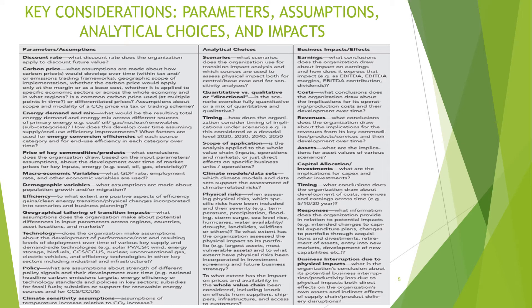There are various parameter considerations for climate risk. The discount rate is the rate at which an organization is willing to accept risk. Carbon price is usually set by government or provincial government within their jurisdiction. Other parameters include energy demand and energy mix — the percentage of coal, gas, nuclear, renewables, etc. — key commodity prices, macroeconomic variables such as GDP, inflation, and unemployment, demographic variables such as population growth and migration, efficiency of clean energy, and geographical tailoring and new technology.